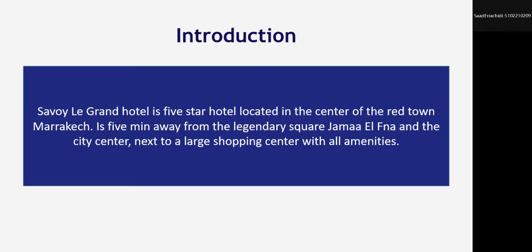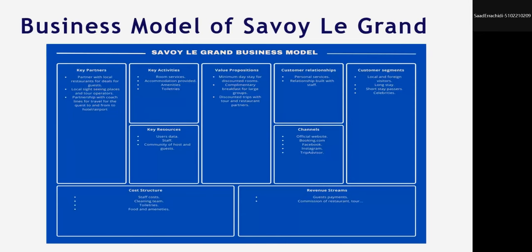Now I will share with you our hotel business model. Generally, a business model is composed of nine essential elements: key partners, key activities, key resources, value proposition, customer relationships, channels, customer segments, cost structure, and revenue streams.